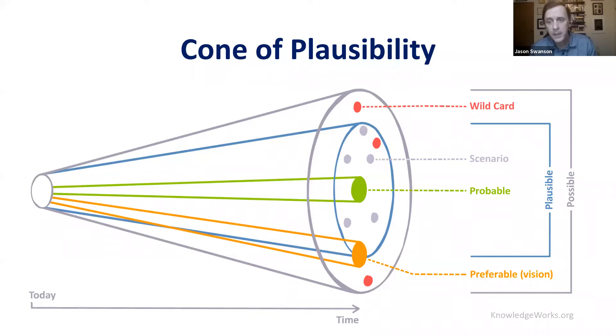And then our third P, my favorite, is the preferable future. It's the vision. The major difference here is that plausible and possible futures really deal with inbound change. We're making assumptions about that change and thinking about what kind of futures they might create.